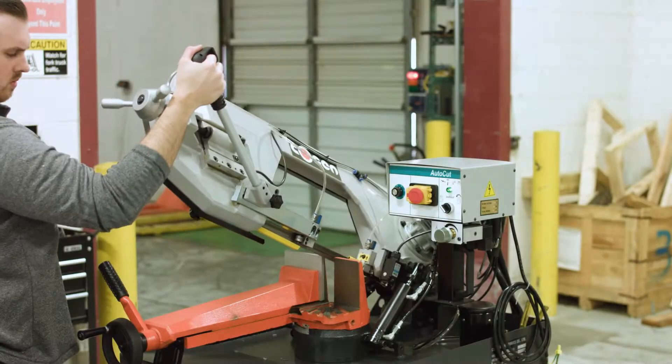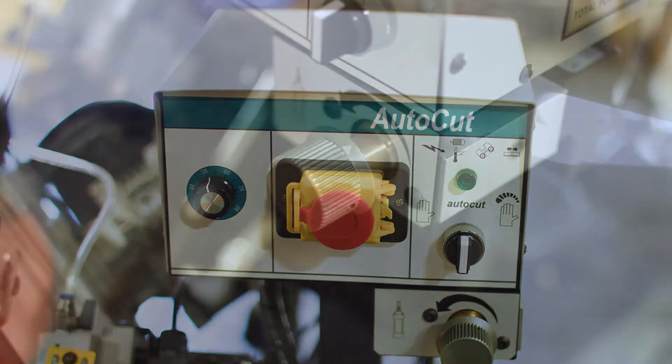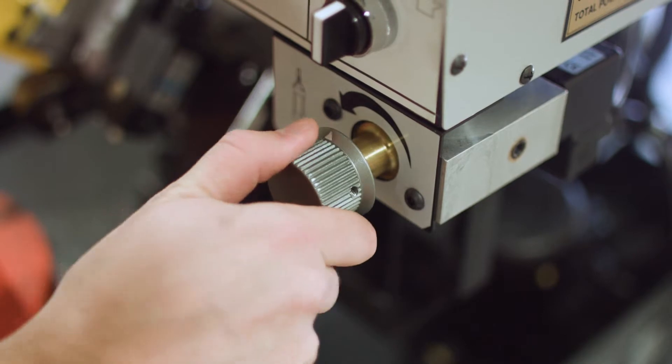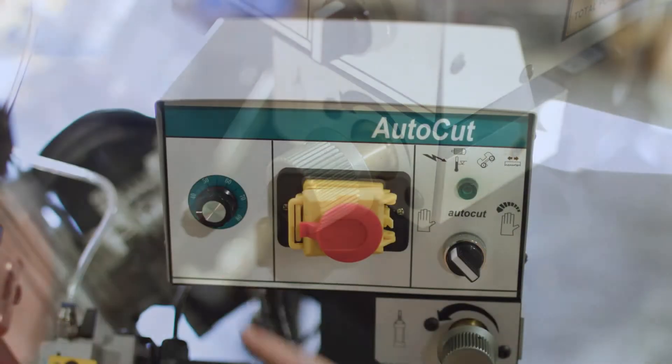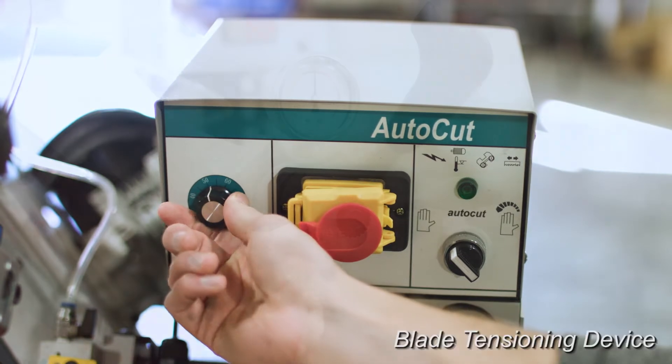Though it is a manual saw, one special feature it does include is an auto-cut mode with a large feed rate control valve. This saw allows for an infinitely variable blade speed adjustment from 125 to 250 feet per minute.